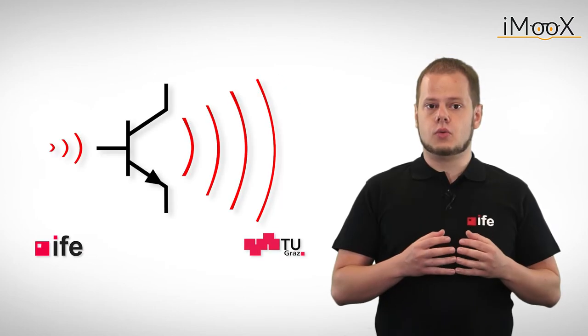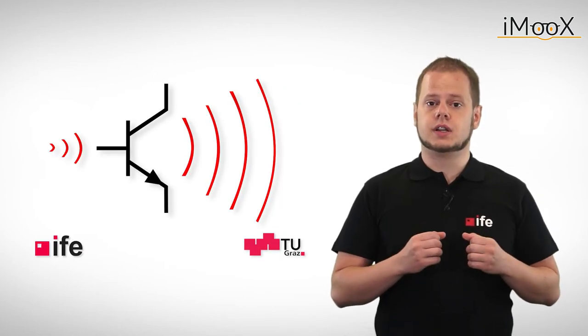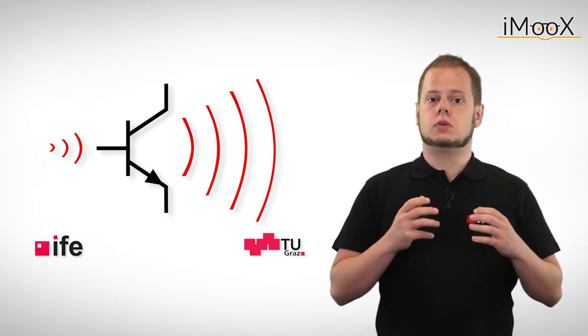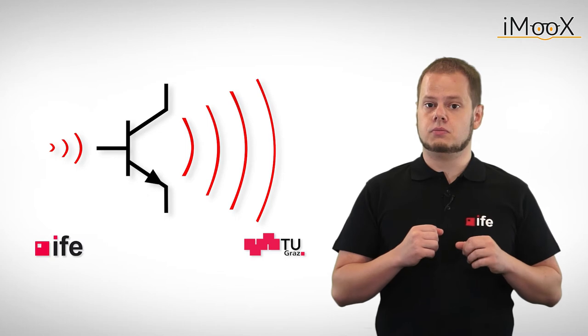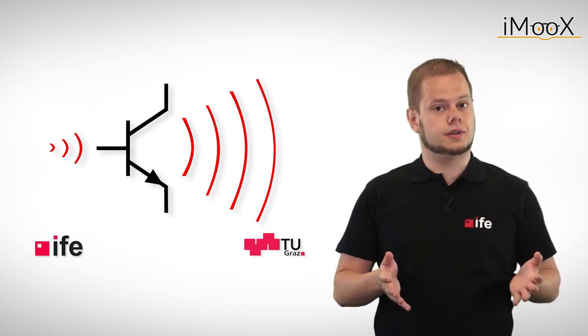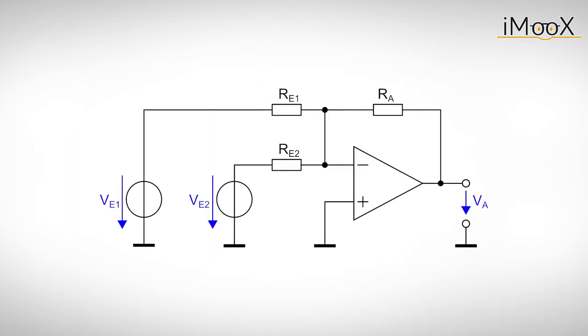Up to now we are able to multiply the input signal by either a positive or a negative factor. In order to calculate the sum of or difference between two voltages we have to adapt our circuit. Next is the analog summing amplifier.